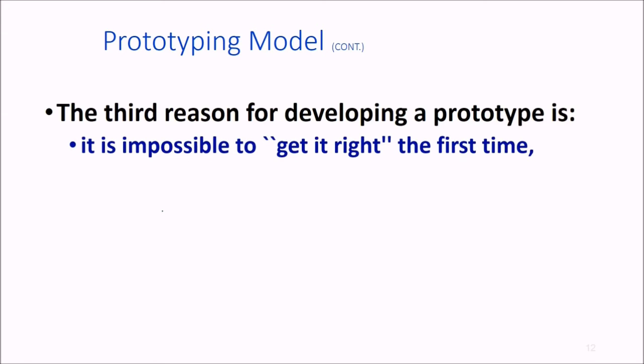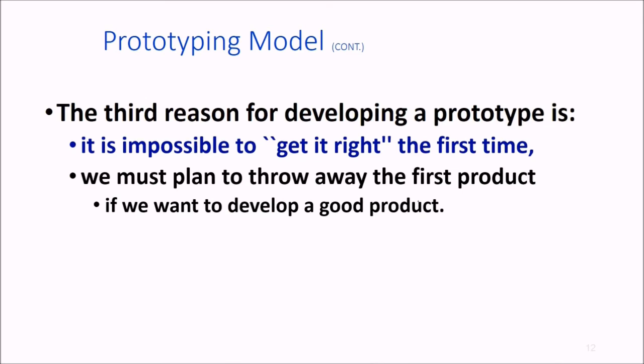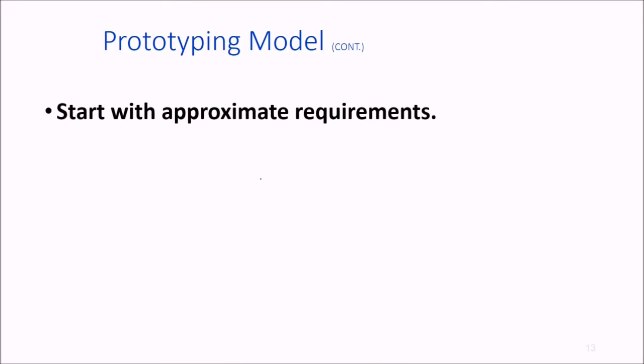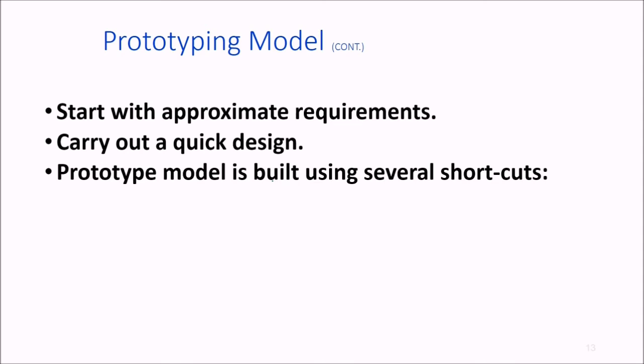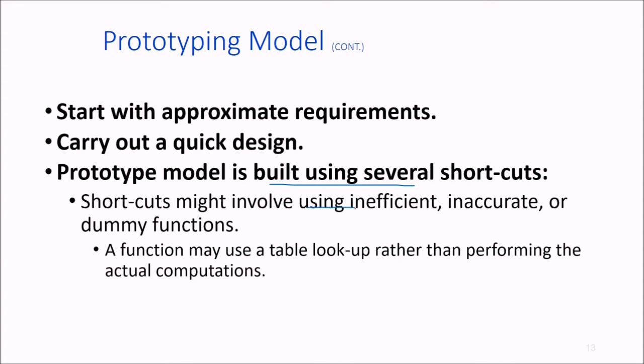The third reason is that you can't get things right the first time. You must plan to throw away the first product if you want to develop a good product. Start with approximate requirements and carry out a quick design. The prototype is built using shortcut methods like inefficient, inaccurate, or dummy functions. For example, a function may use table lookup rather than performing actual computation.